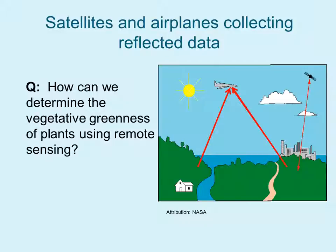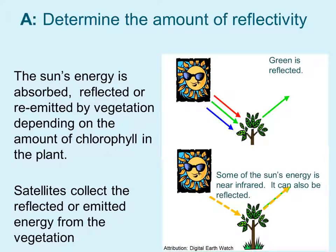How can we determine the vegetative greenness of plants using remote sensing? We can determine the amount of reflectivity from vegetation by determining how much of the sun's energy is absorbed, reflected, or re-emitted by vegetation. This all depends on the amount of chlorophyll in the plant. Satellites collect the reflected or emitted energy from the vegetation. In the top image, you can see the green is reflected in healthy vegetation, and some of the sun's energy is also near infrared, which can also be reflected in healthy vegetation.